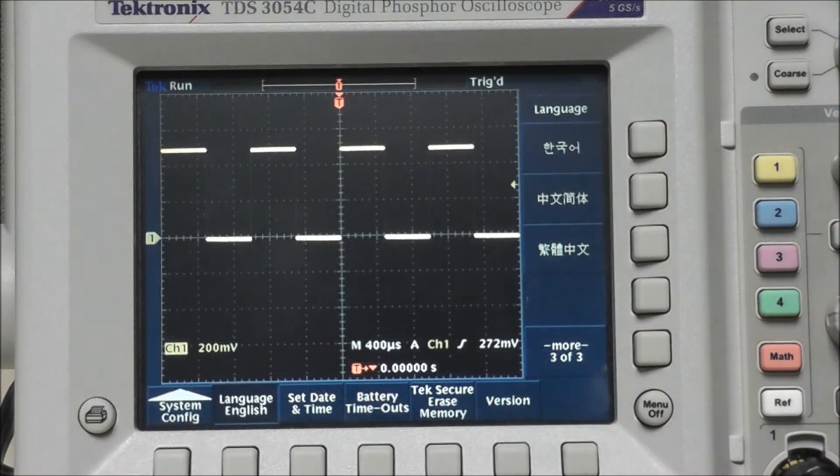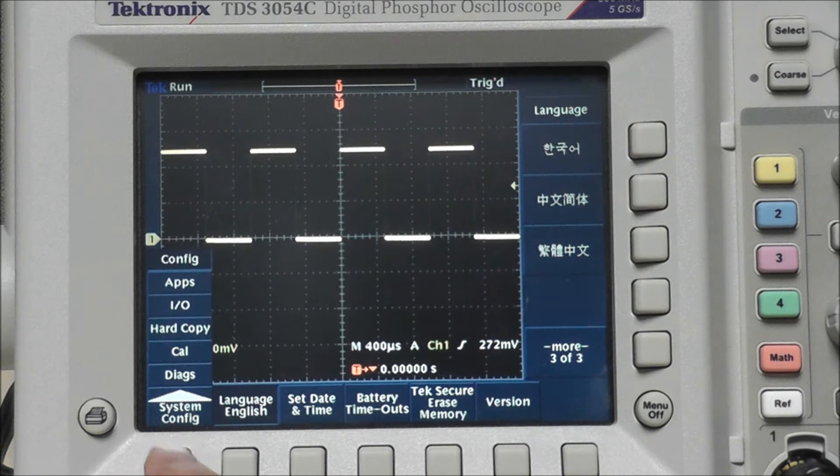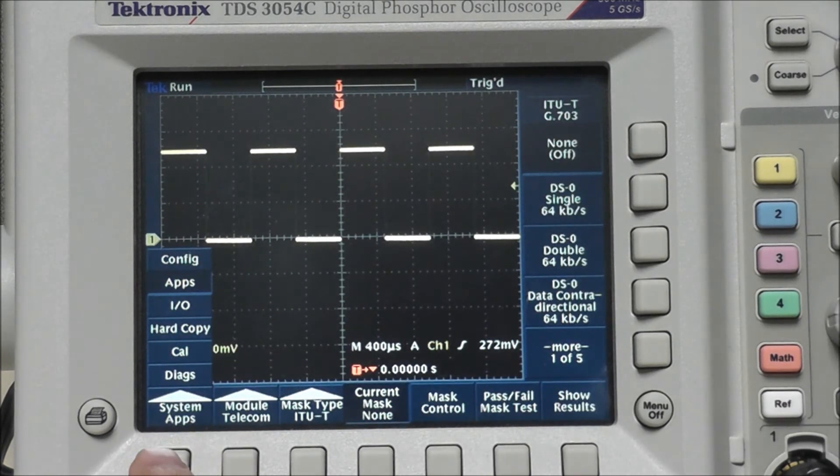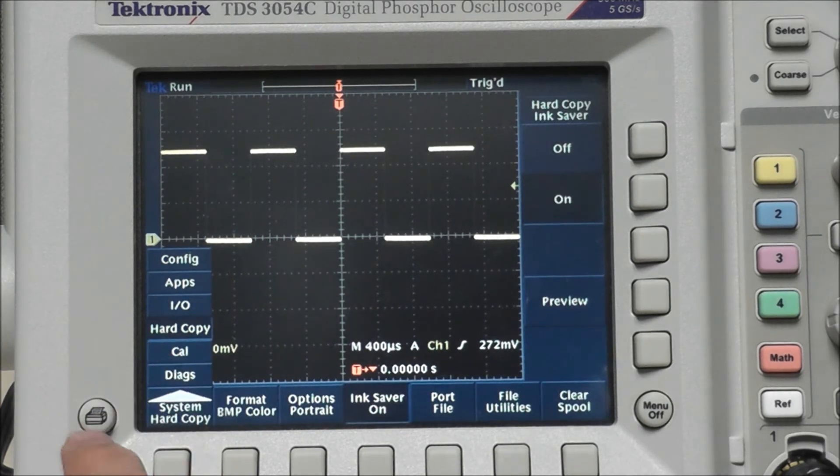On the far left hand side, system config, apps, IO, hard copy. We're going to go to hard copy which is going to control that button.